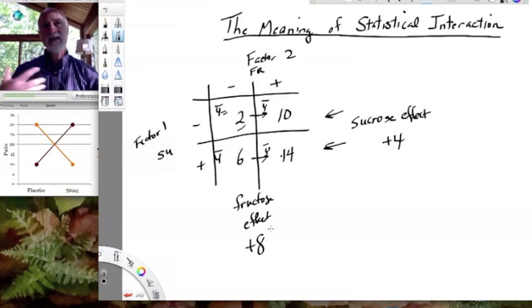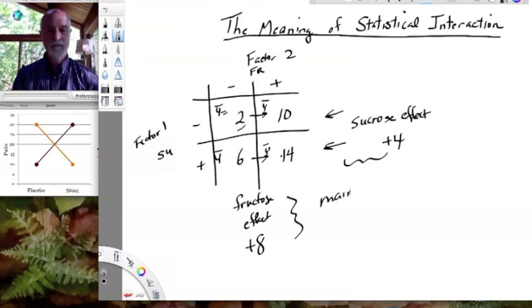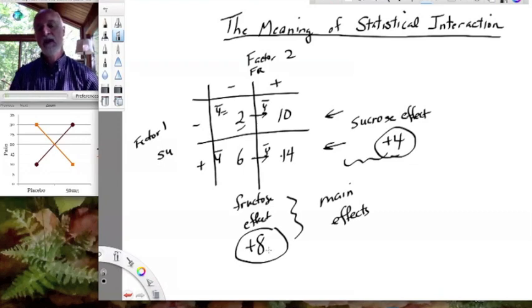It adds 8 to our growth, okay? So this is our estimate of what our main effects are. In fact, what we've quantified here so far are the main effects of fructose and sucrose. So the main effect of sucrose, when we add it, is plus 4. The main effect of fructose is plus 8.